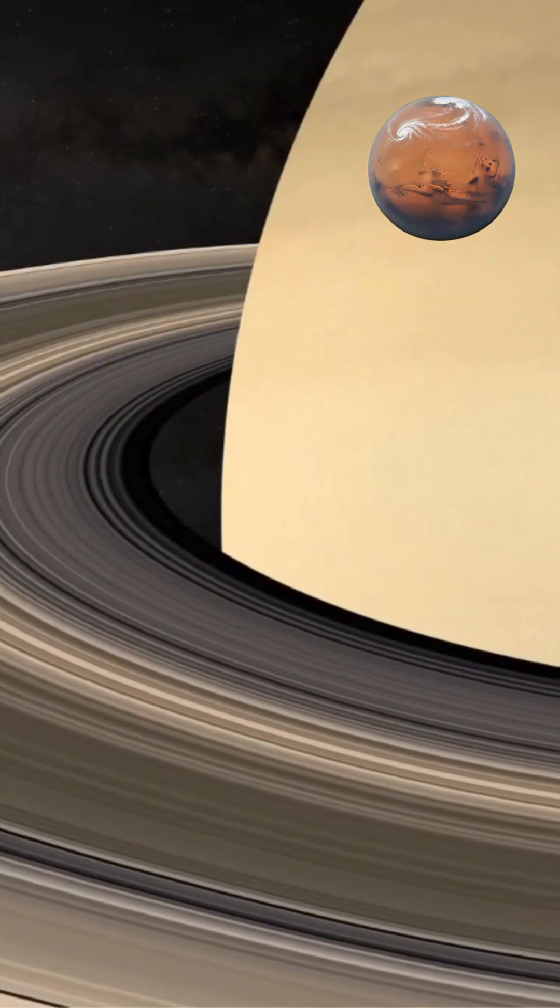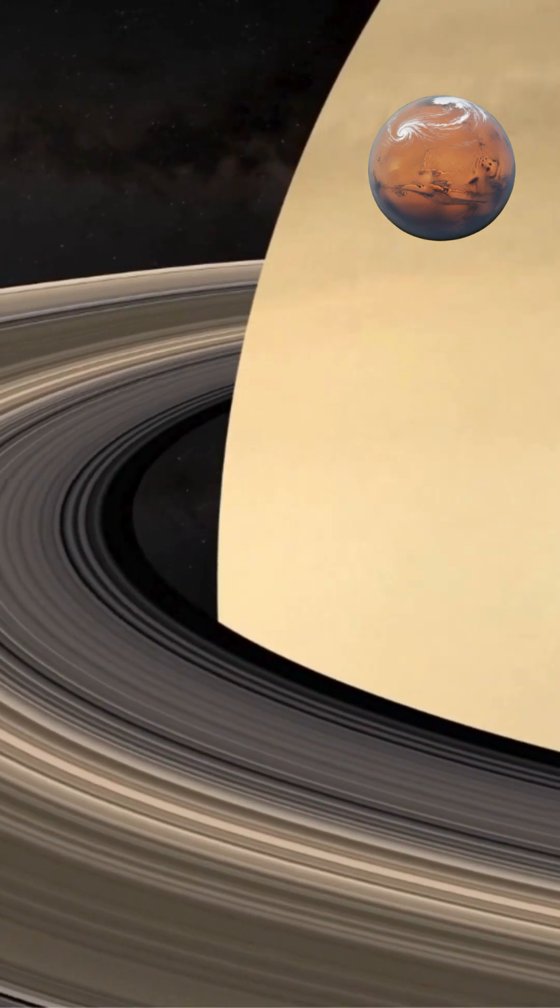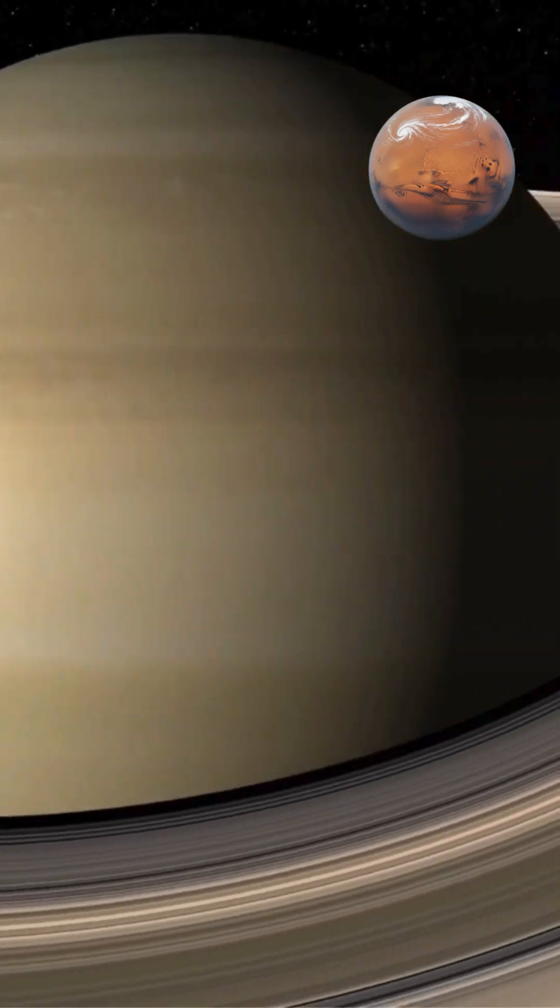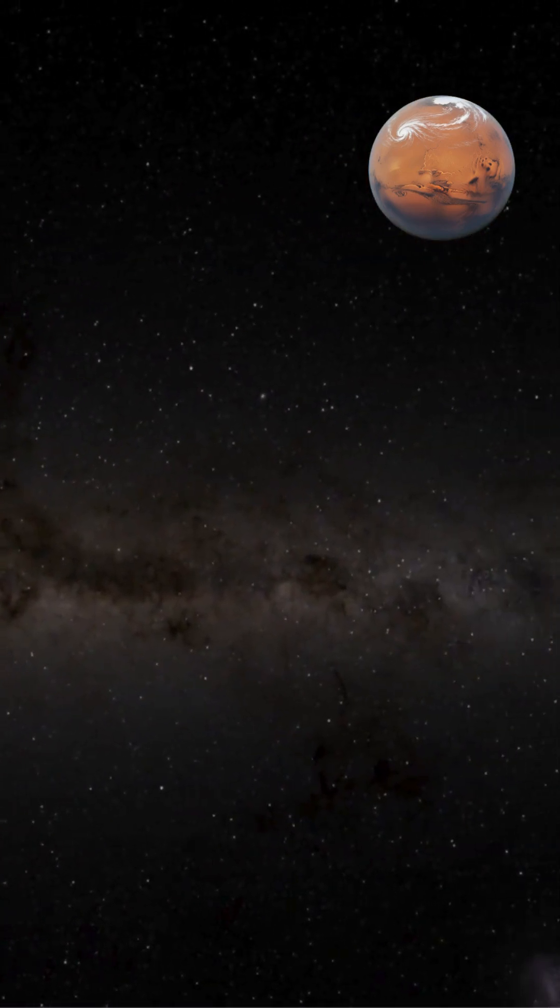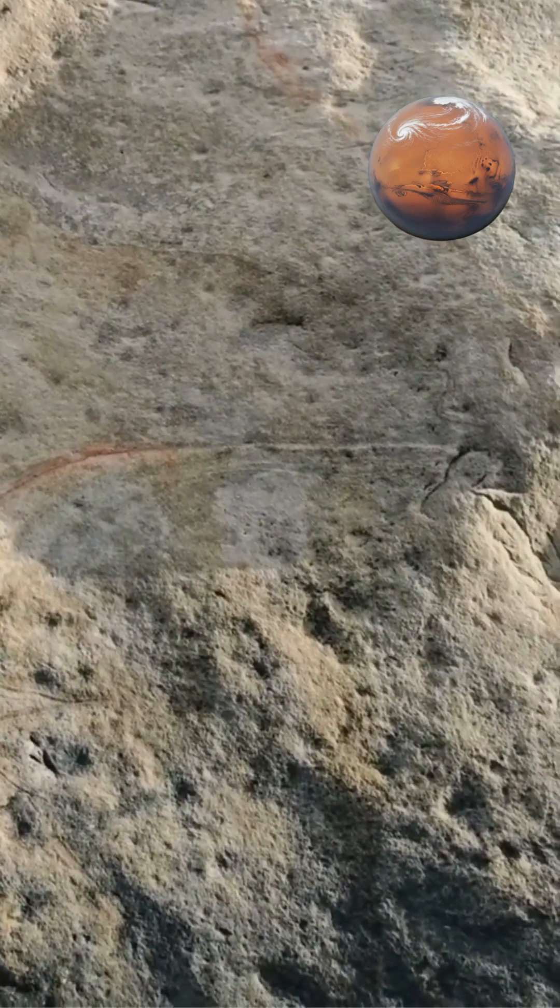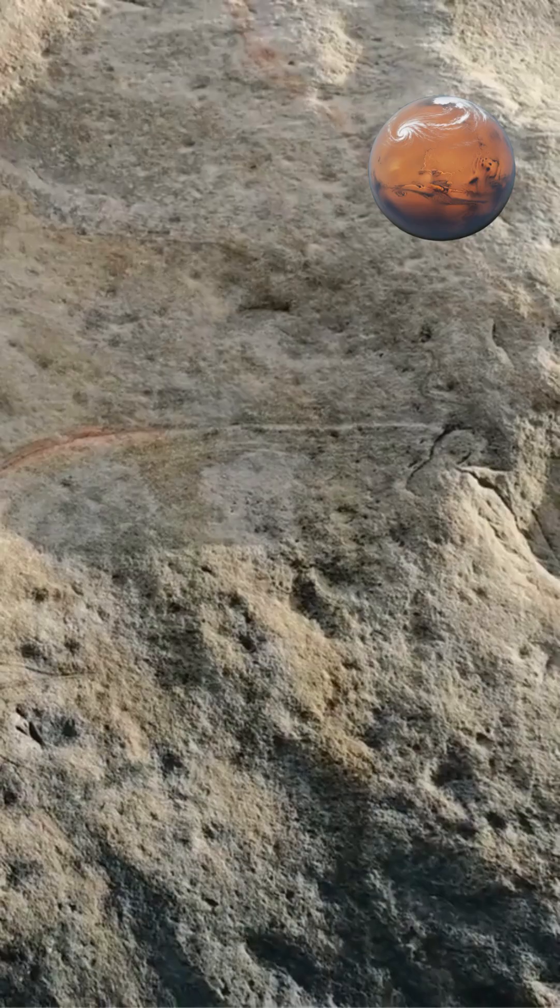Saturn's rings exhibit differential rotation, meaning inner rings orbit faster than outer rings. This creates shearing forces that help maintain the disk's thinness. Particles attempting to move vertically are quickly pulled back into the plane by gravitational forces from the surrounding material.